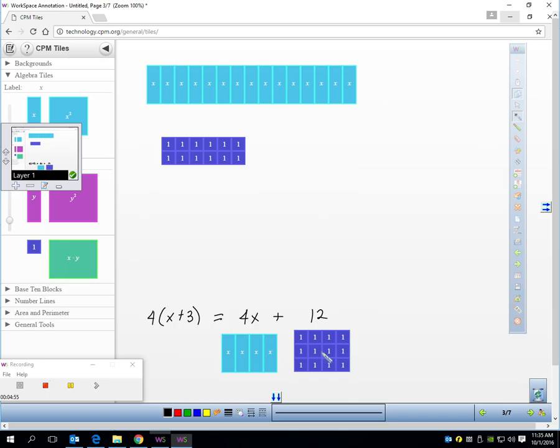Now, obviously, I don't want to draw pictures for every one of these problems. So, what's the shortcut to me going to this website, this technology site, and dragging these things around? Well, here's the easy way to do it without the tiles. 4 times x is 4x plus 4 times 3 is 12. And do you see how I get the same statement using arithmetic versus drawing pictures? That's what I was trying to show you on the previous page by using the distributive property.